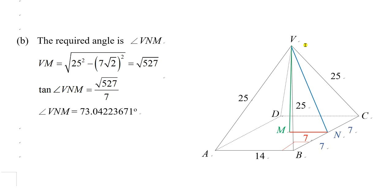We can find the length of VN by using Pythagoras theorem in triangle VNC. By using the right angle triangle VNC, you can find VN equals square root of (25 squared minus 7 root 2 squared). This 7 root 2 is the red dotted line MC.